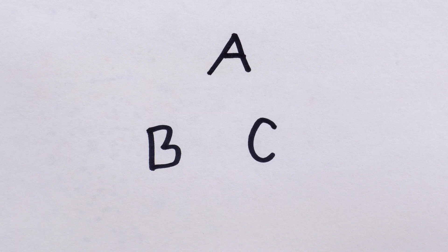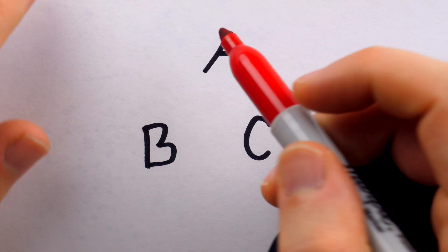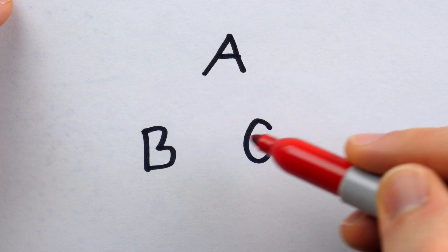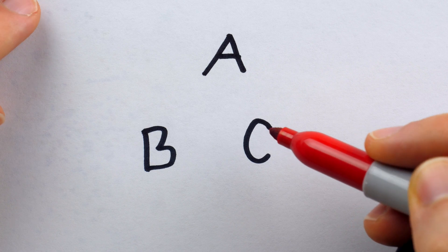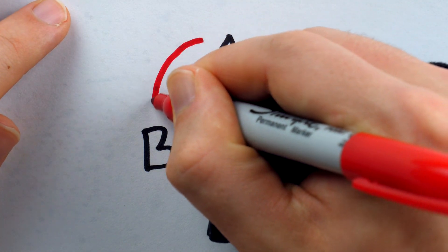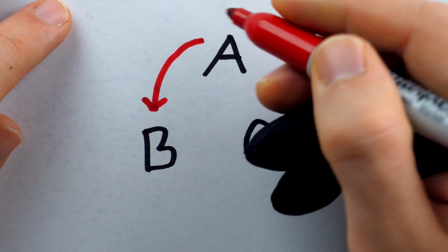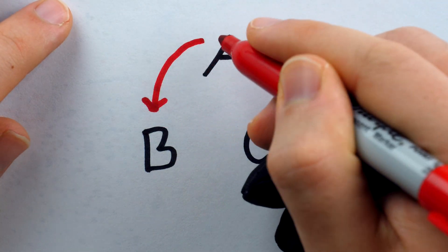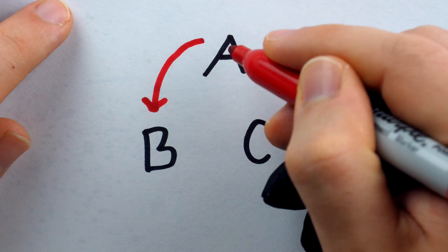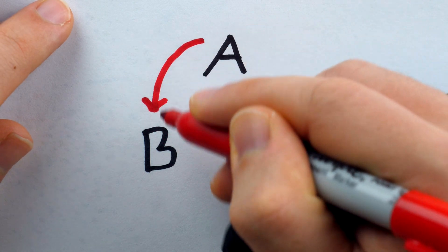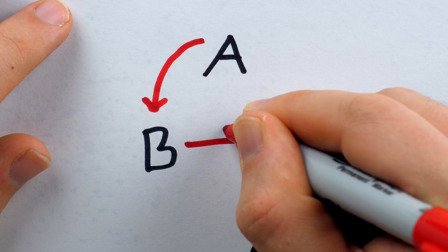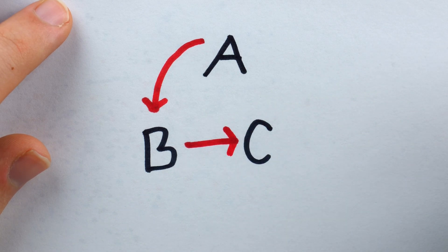For an example, suppose a rational actor has three choices: A, B, and C. Perhaps he prefers A to B, which we can represent with this arrow showing the preference relation — A is preferred to B. Perhaps he also prefers B to C.